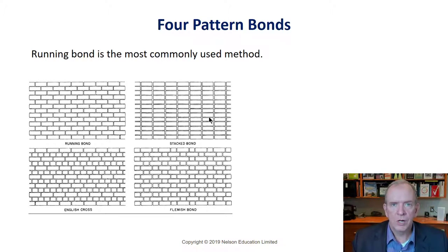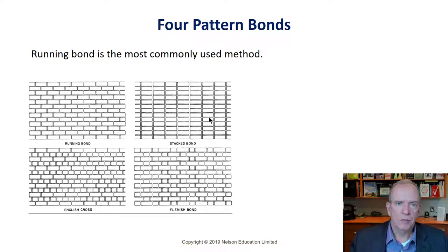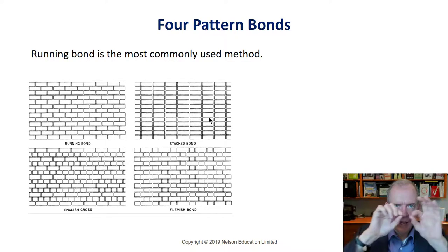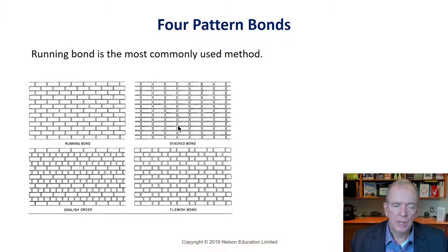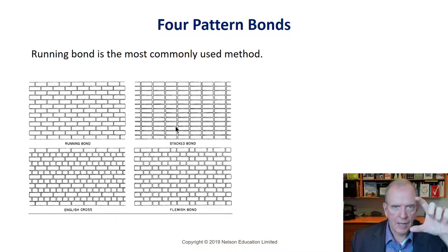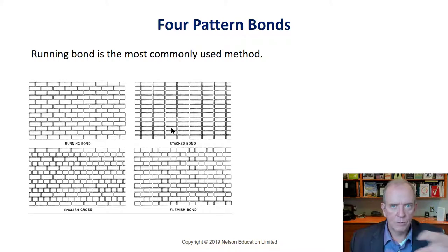At George Brown College, our C building has stack bond blocks everywhere. It was a special architectural block manufactured for that purpose. Every second course of blocks has a metal track running through it to give it strength so it doesn't crack vertically. Usually in brick, depending on the height of the brick, say every three or four courses you would have a horizontal track that would strengthen it if you were doing stack bond.